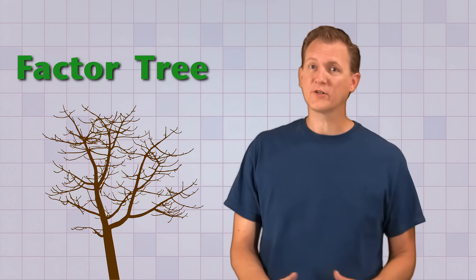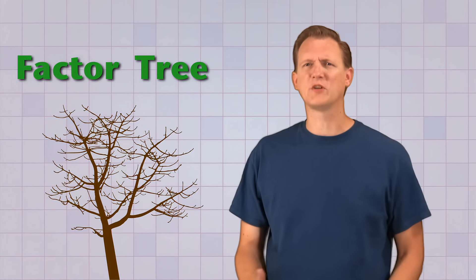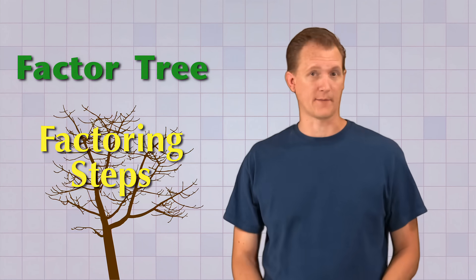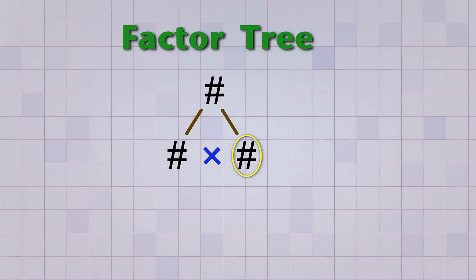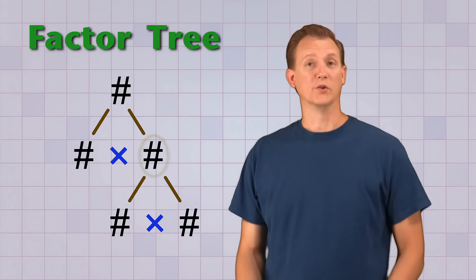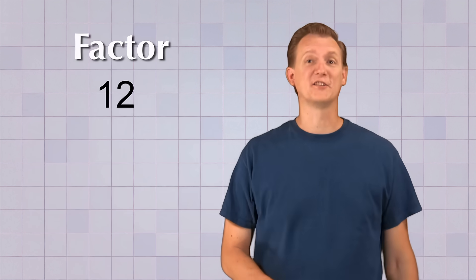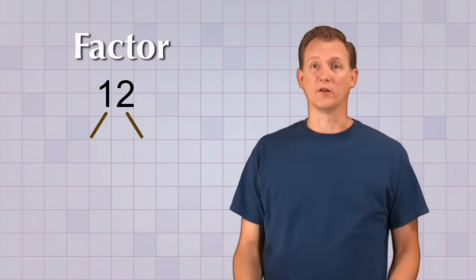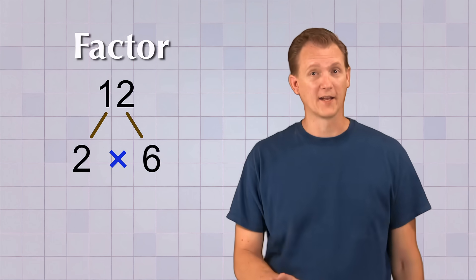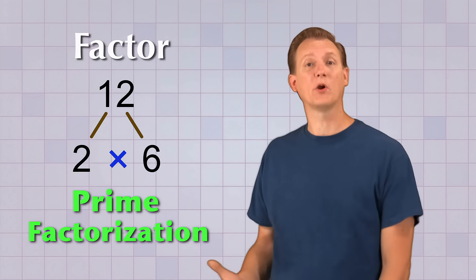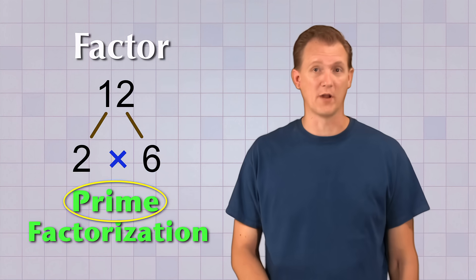To do this, I'm going to use something called a factor tree. A factor tree is just a diagram that helps you keep track of multiple factoring steps. When you factor a number, you write the two factors below it with lines or branches going to them. And then, if you factor one of the factors, you do the same thing again. So let's get started: 12 can be factored into 2 times 6. But we're not done yet, because we're doing prime factorization — we need to keep going until all the factors are prime numbers.